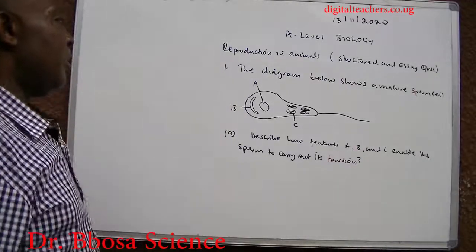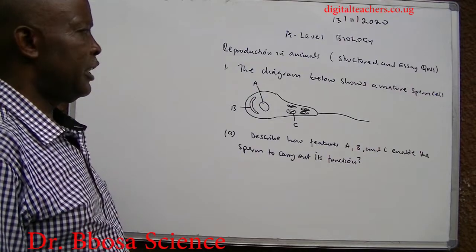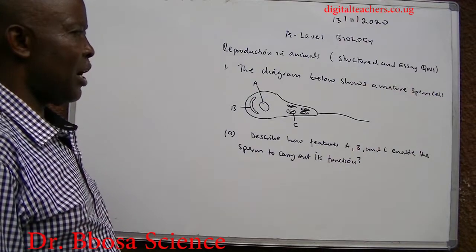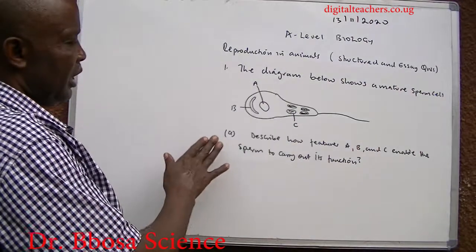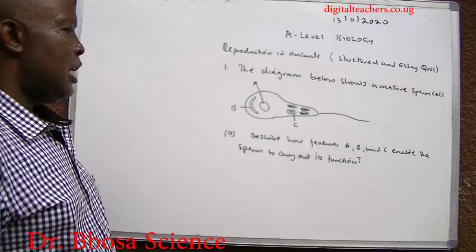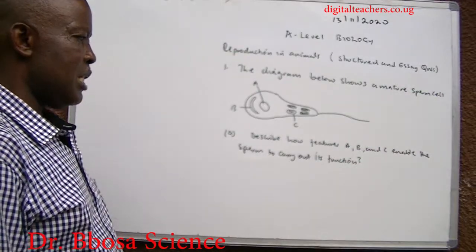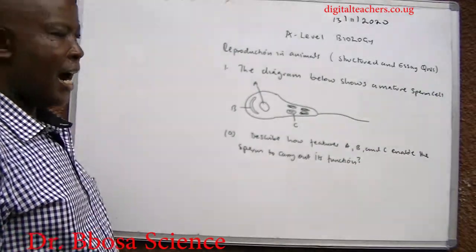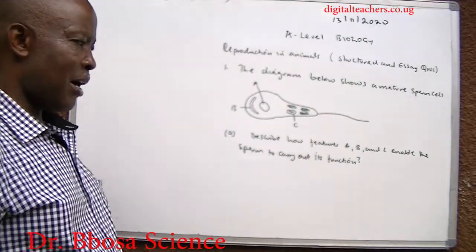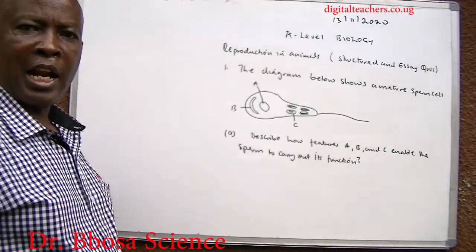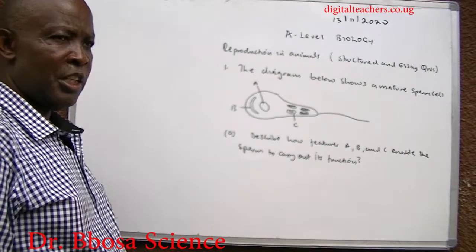Number one: the diagram below shows a mature sperm cell. A. Describe how features A, B and C enable the sperm to carry out its functions.